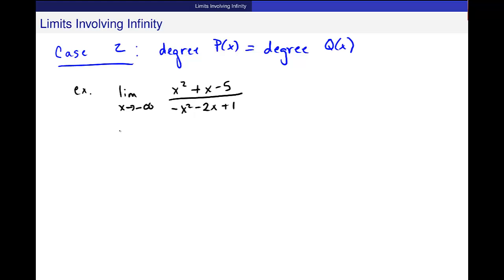Again, I use this dominant rule property. x squared over negative x squared. And I get 1 over negative 1, and the limit of that is just negative 1.